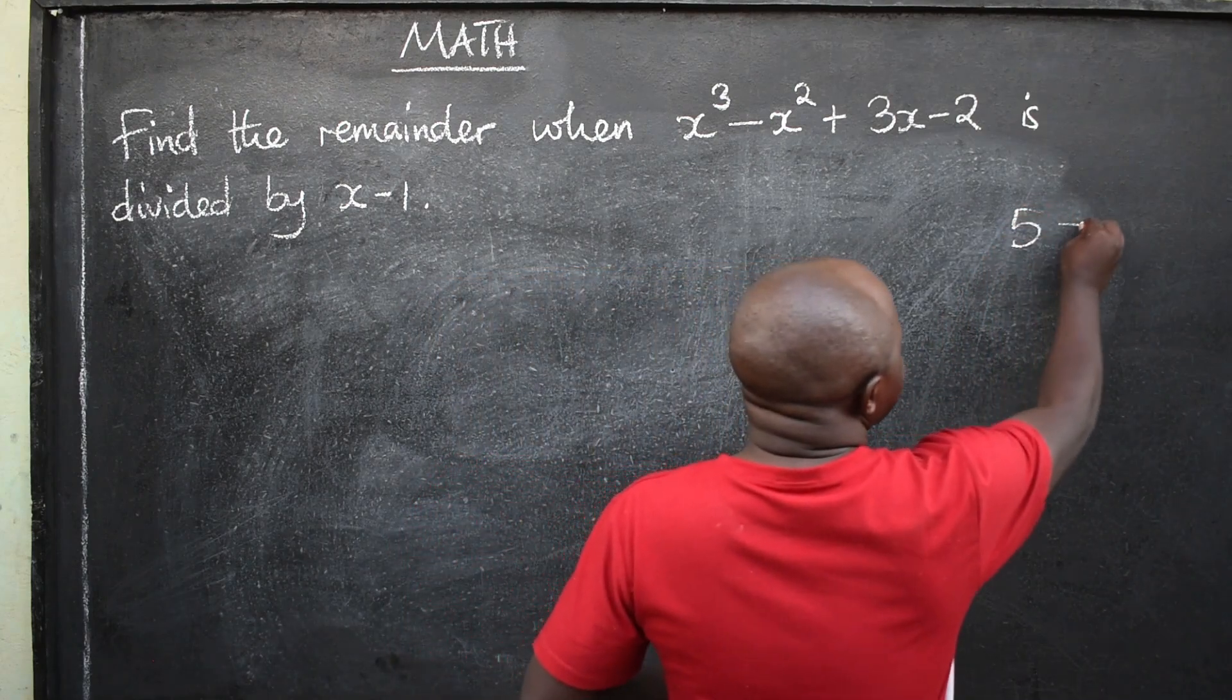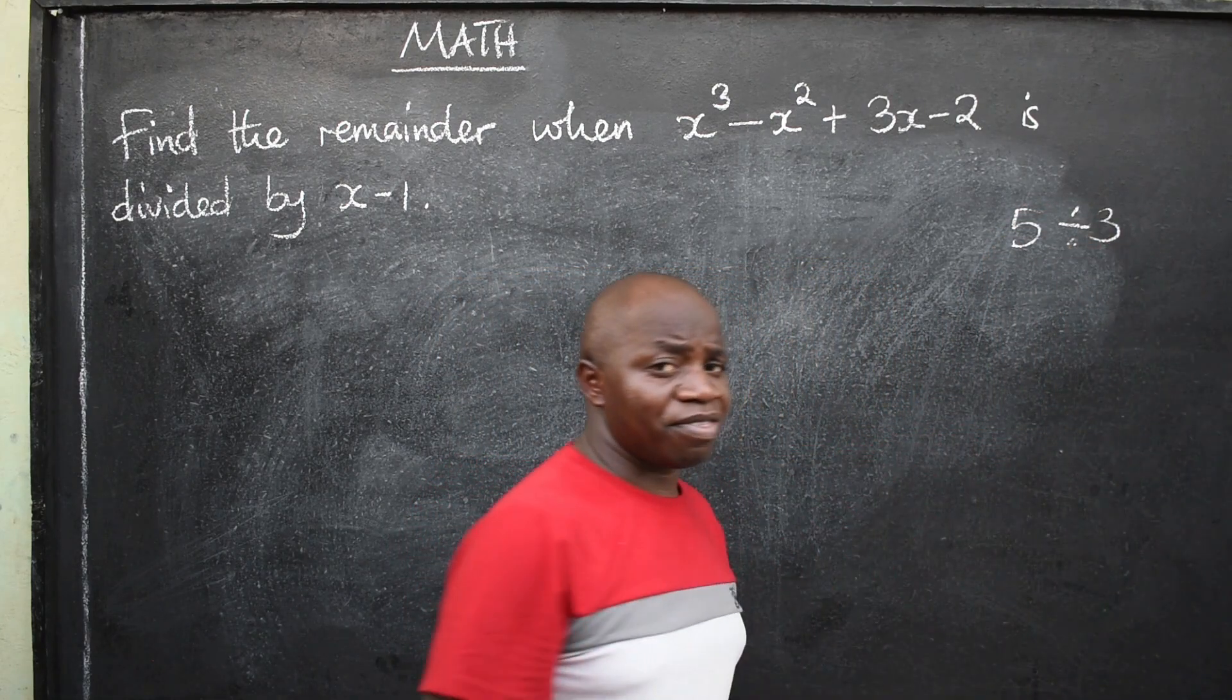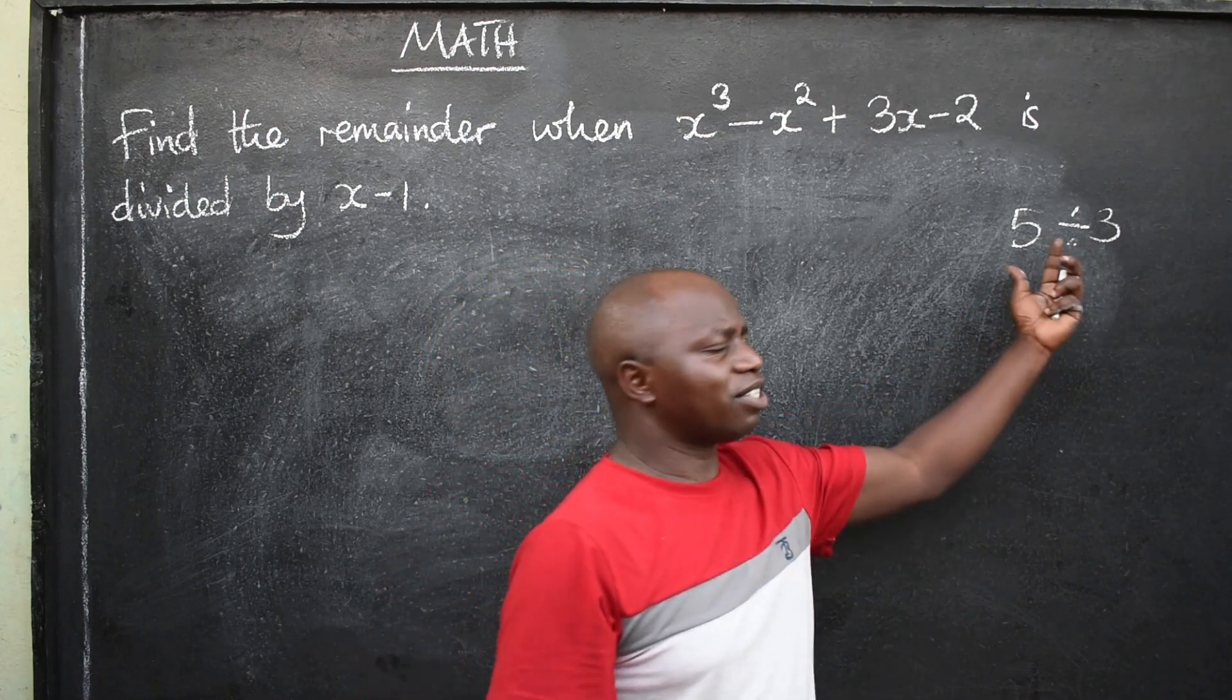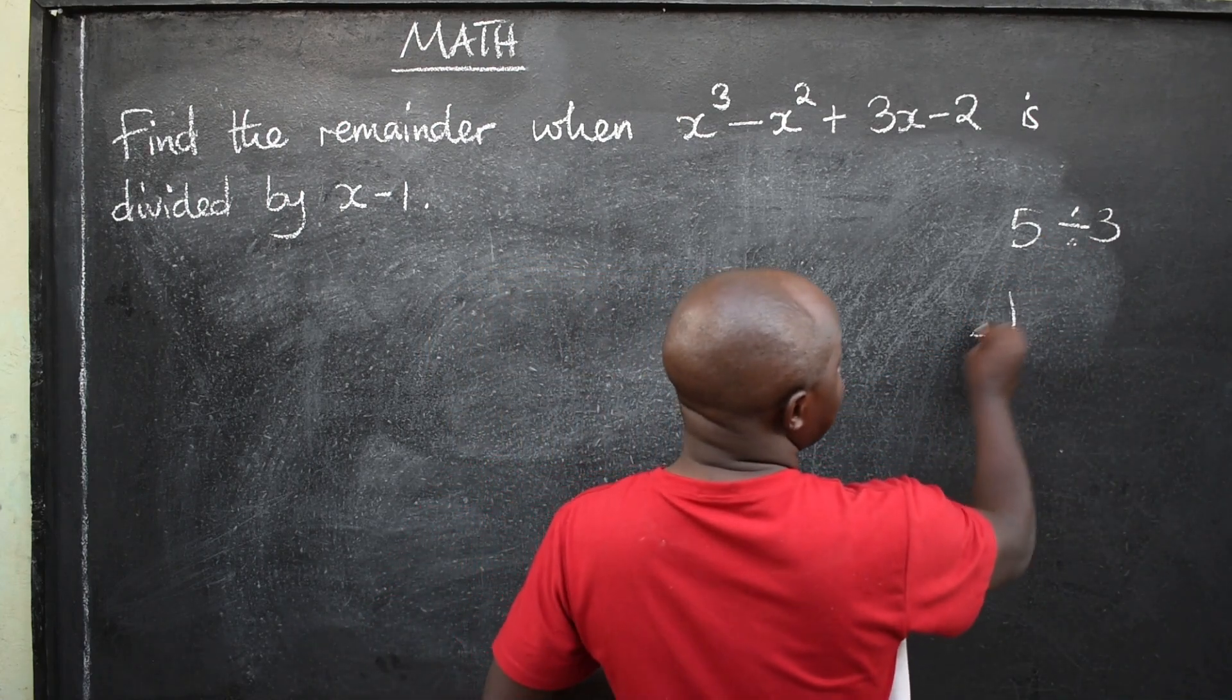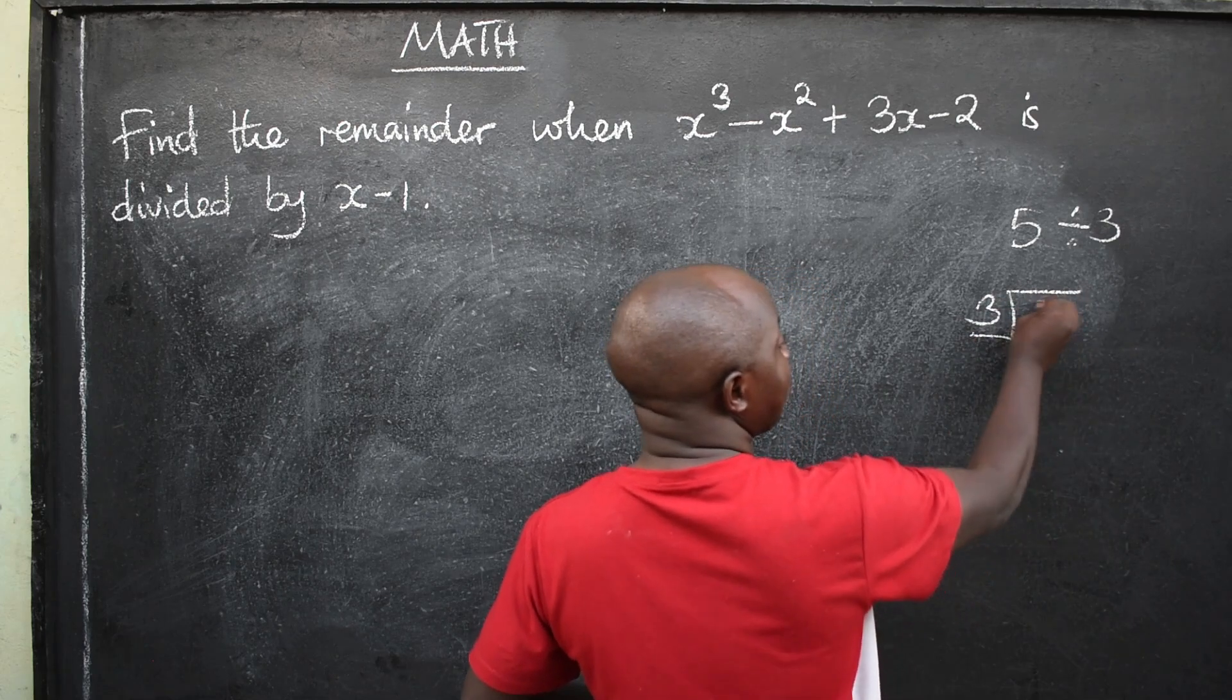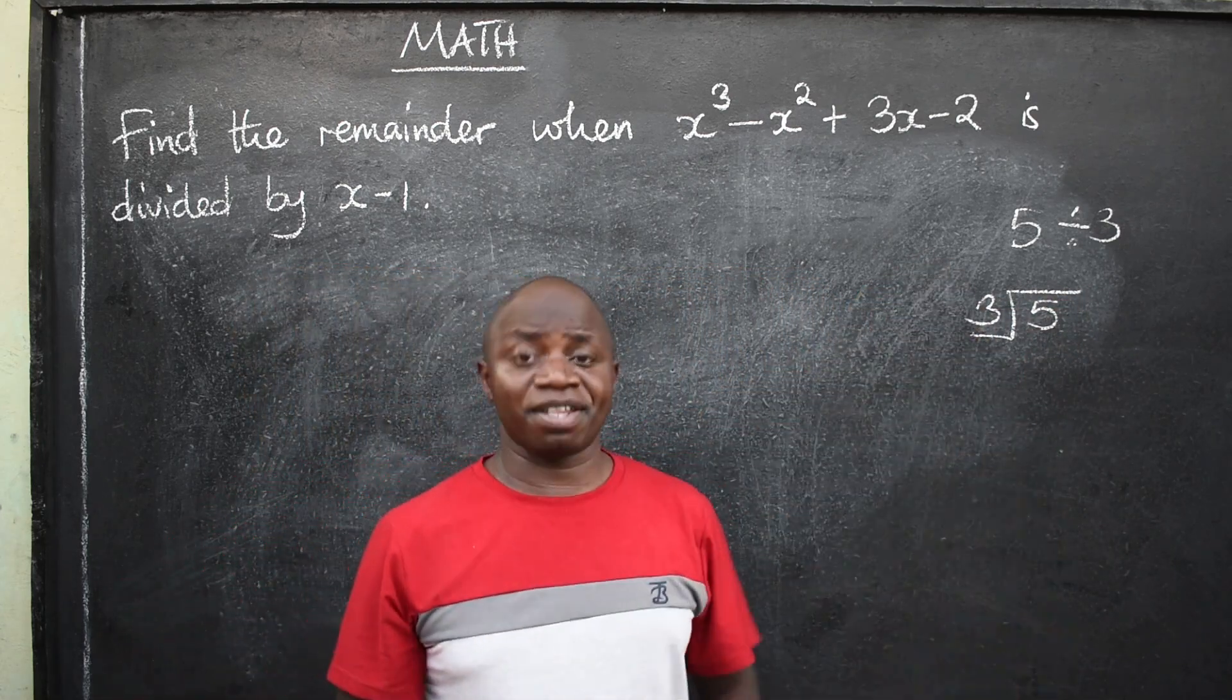It's like you have 5 divided by 3, for example. When I divide this, what will be the remainder? Which can also be written in this form. I have the 5, 3 here, and 5 here. You divide. You know these basic mathematics, right?